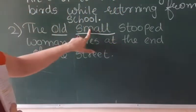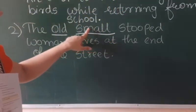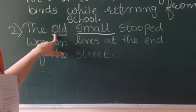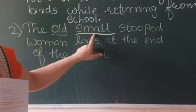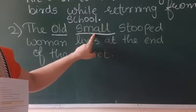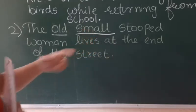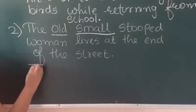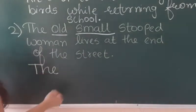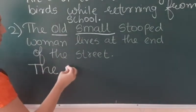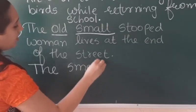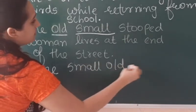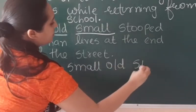So which comes first — opinion or age? Opinion will come first, as we have seen in the table. So we arrange it as: 'the small old stooped woman.'